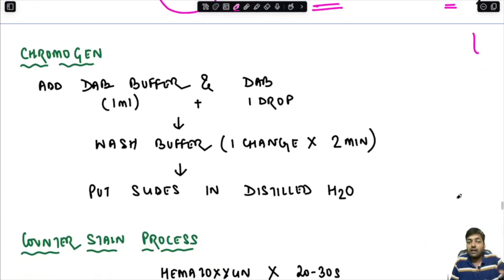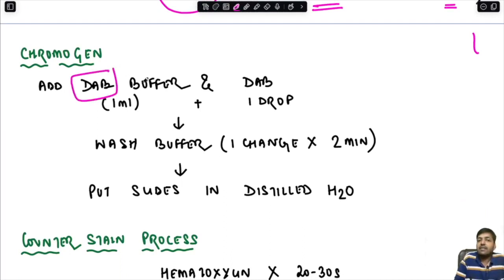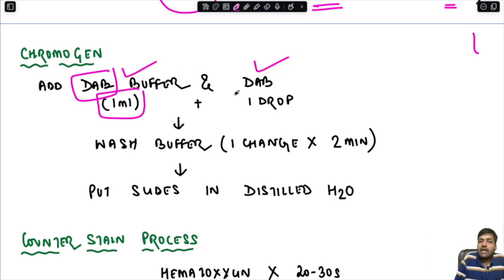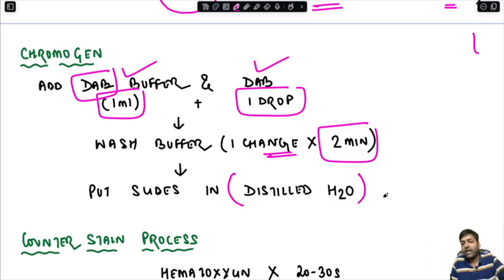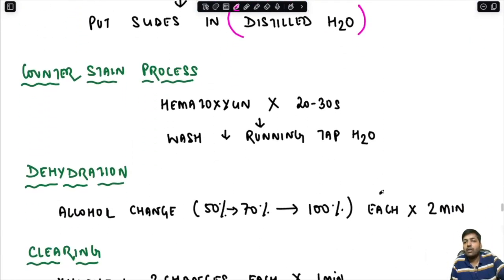Next, add the chromogen — diaminobenzidine (DAB) reagent. DAB is prepared by adding one drop of DAB to 1 mL of DAB buffer. After adding the chromogen, put the slide in wash buffer for one change of two minutes, then in distilled water. After this, do counter staining with hematoxylin for 20 to 30 seconds, then wash under running tap water.